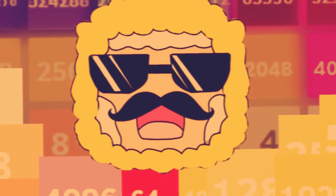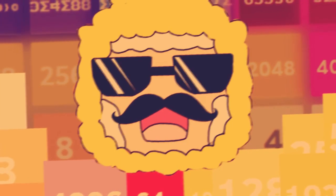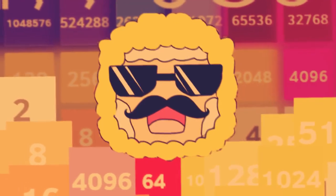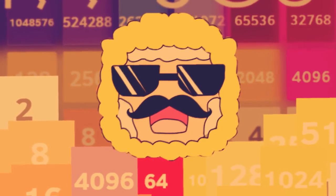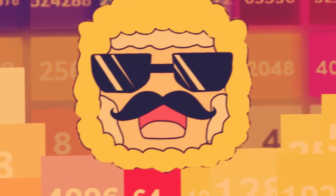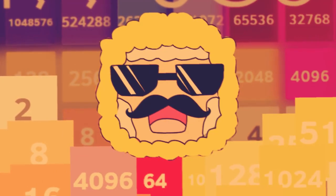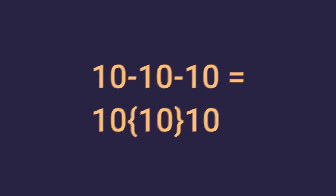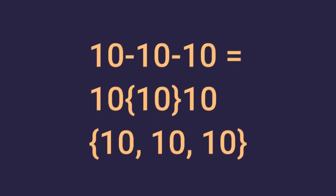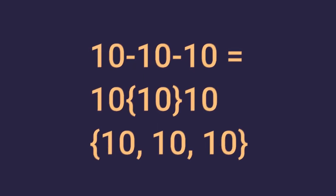A link array notation is an extension of the Bird's Array Notation, and it can be useful beyond the end of the Bird's Array Notation. Link notation does not have brackets. Also, link notation is shown like this: A 10-10-10 equals to this, which looks the same as the Bird's Array Notation.